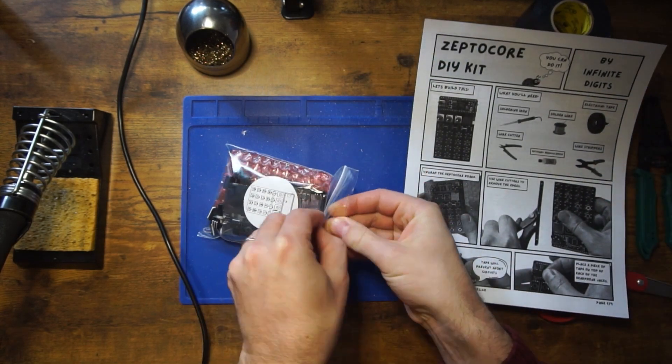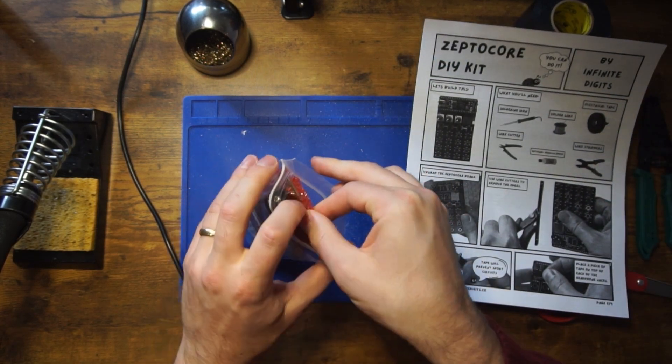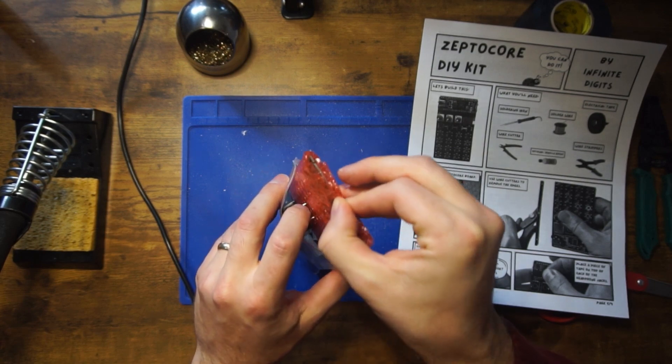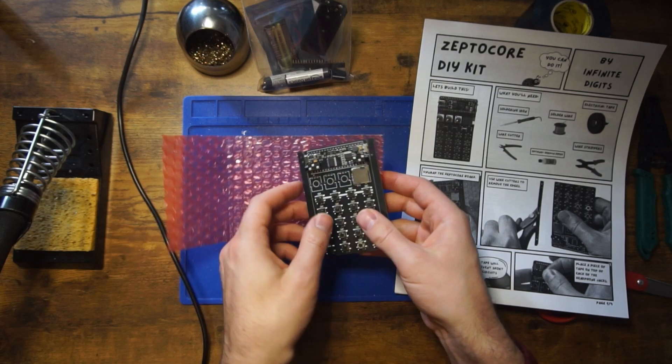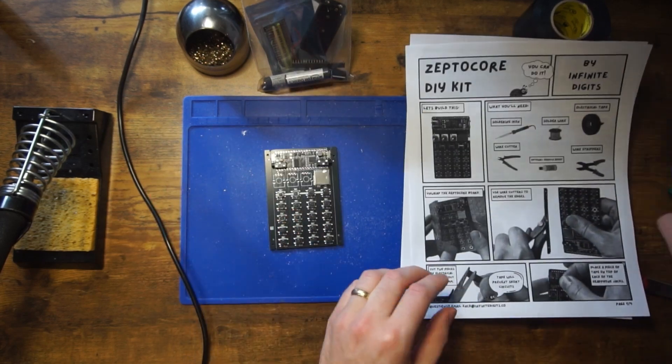You should have a bag with all the materials, but you'll also need a soldering iron, solder wire, electrical tape, wire strippers, wire cutter, and optionally you can use some Gorilla epoxy at the end.